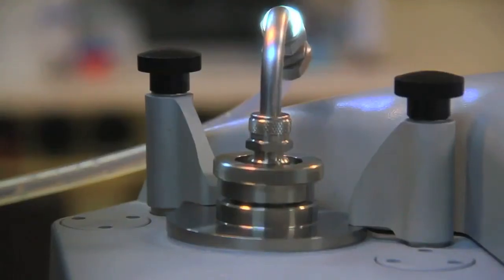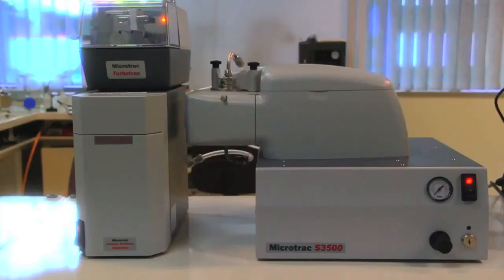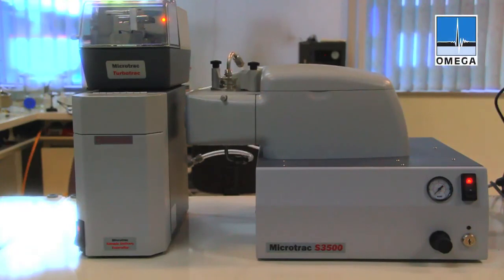Once again, this is the Microtrack S3500, which can be used to analyze the particle size distribution of liquid suspensions as well as dry powders. It has a size range from 0.02 microns to 2,800 microns. It uses a unique tri-laser technique to provide highly accurate and repeatable data. Thank you for watching.